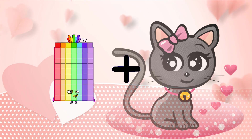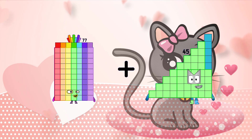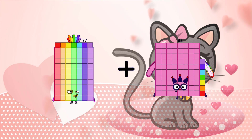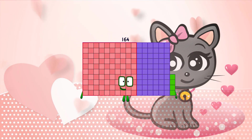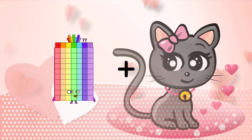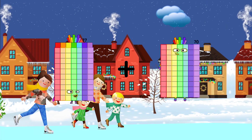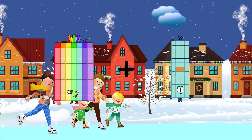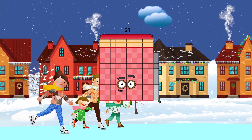77 plus 87 equals 164. 77 plus 52 equals 129.